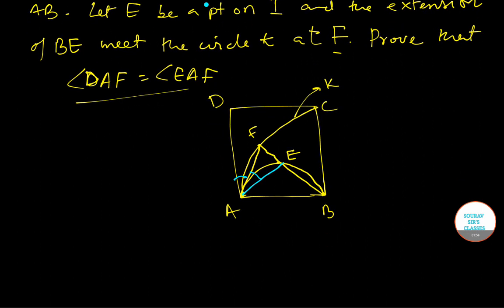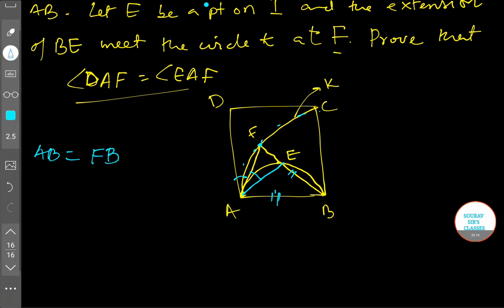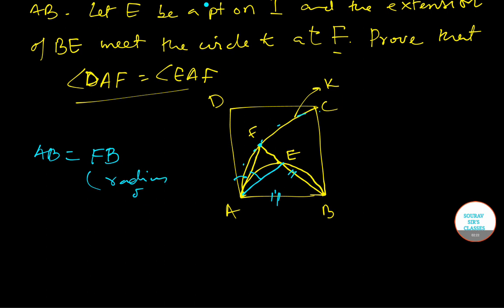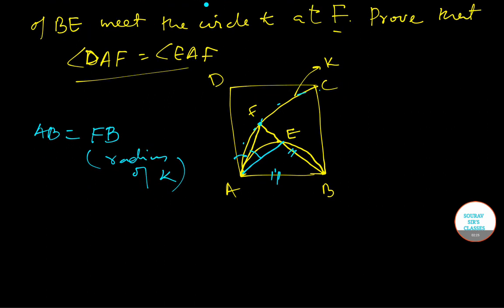Starting the proof, we first note that AB equals FB, since both are radii of circle K — AB is a radius and FB is a radius, so AB equals FB. Next, angle AEB equals 90 degrees, since AB is the diameter of semicircle I and an angle in a semicircle subtends 90 degrees.